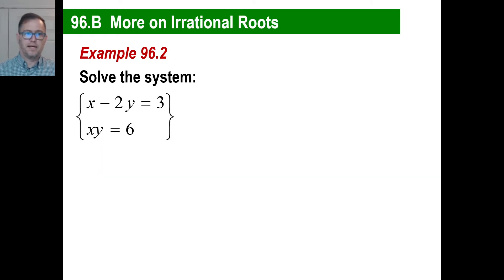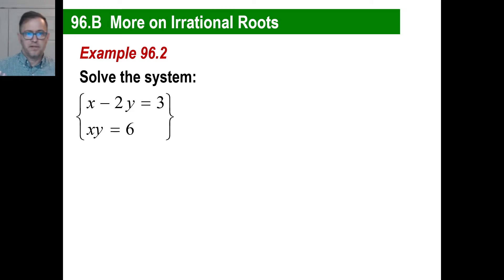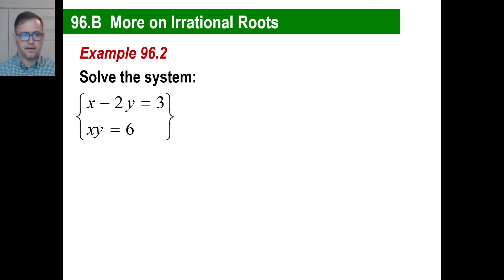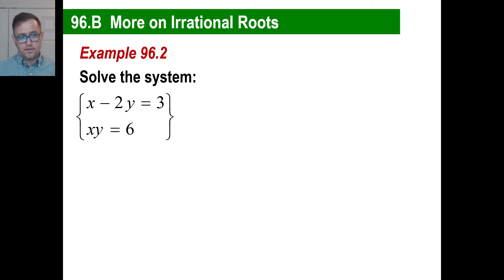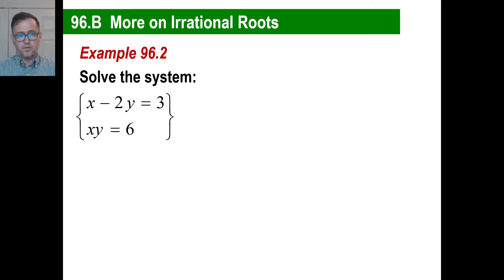Let's look at our second part — irrational roots. Which means they're not ratios; we're going to have square root answers as part of this. Looking at this system, we have three choices: graph, elimination, or substitution. There is absolutely no way to solve this except for substitution.